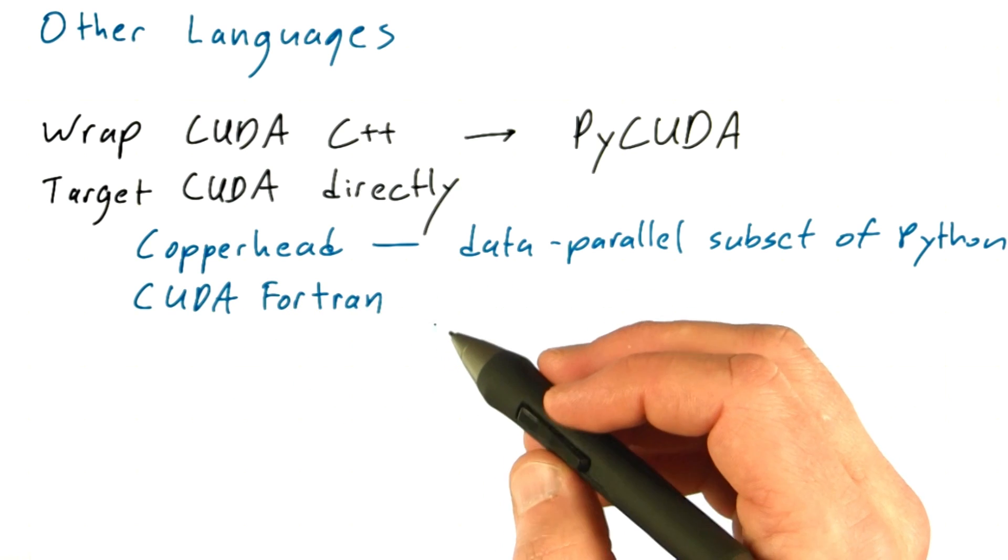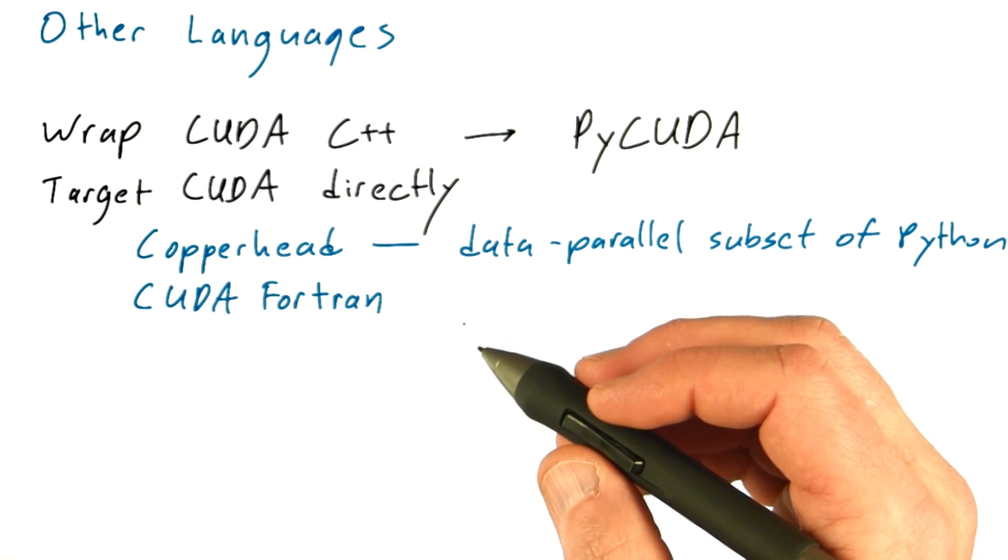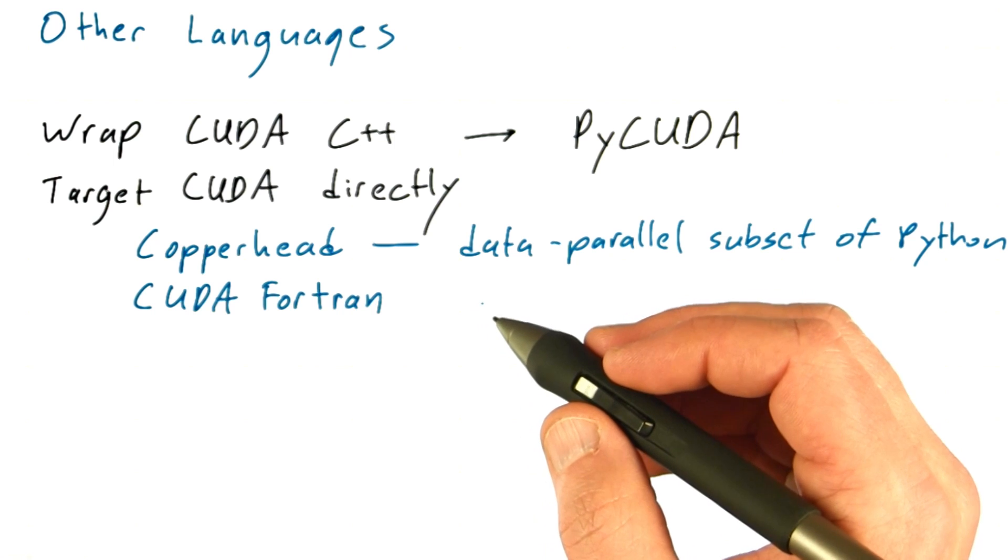CUDA Fortran is a product from the Portland Group that does exactly what it sounds like. It integrates CUDA constructs, such as thread blocks and shared memory, directly into the Fortran language.